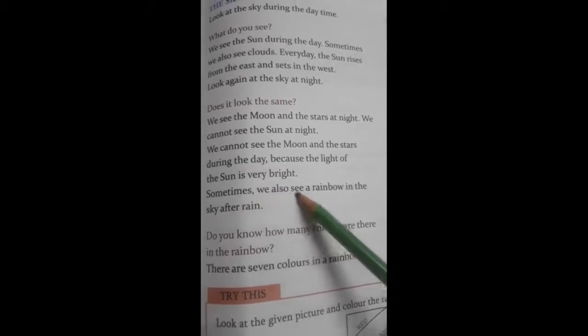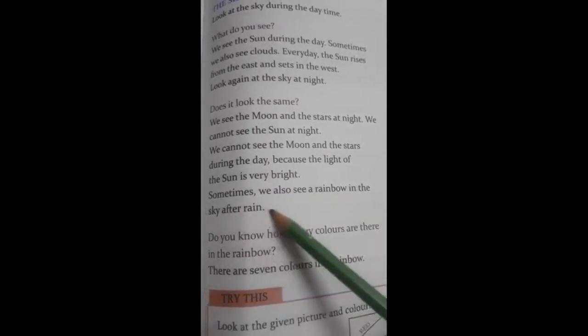Sometime we also see a rainbow in the sky after rain. Children, sky at night, you can see moon and the stars. And this is rainbow. We can see in rainy season.